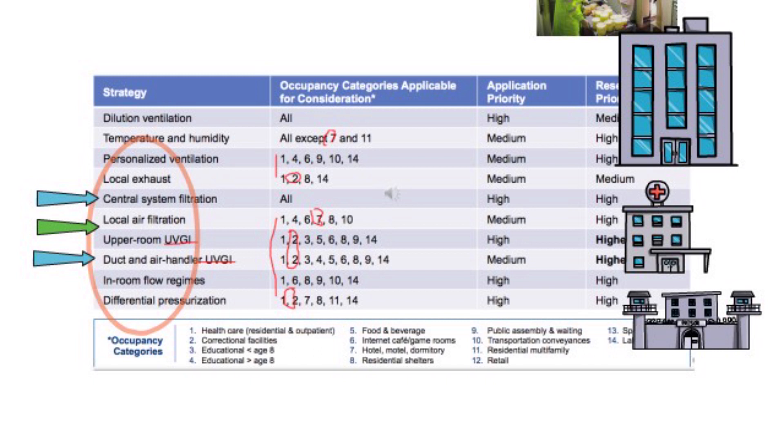Finally, let's look at number seven, hotels. What can we do in hotels? Dilution ventilation is one. Temperature and humidity control is another. Certainly, you can use air purifiers in hotel rooms for local air filtration as well.